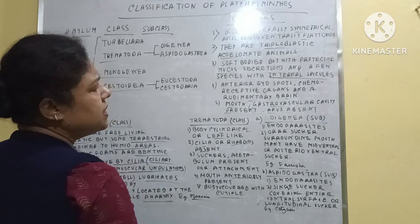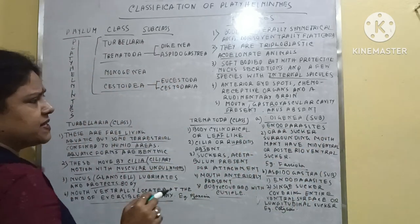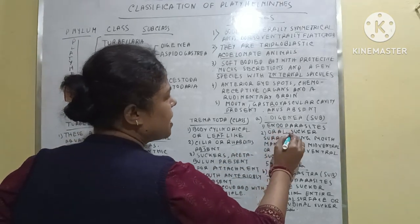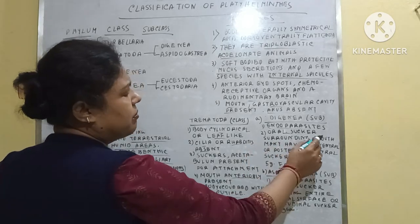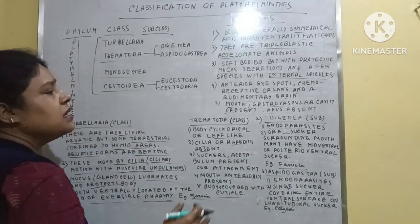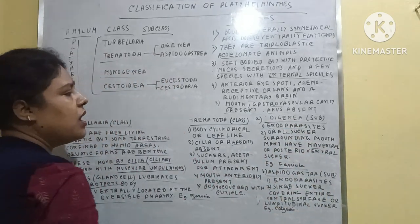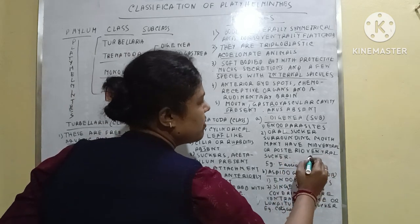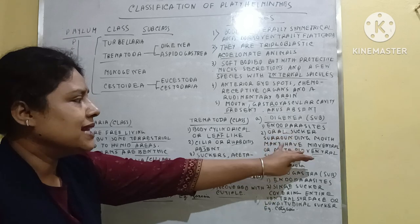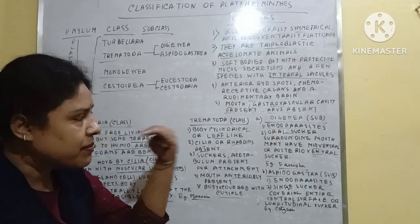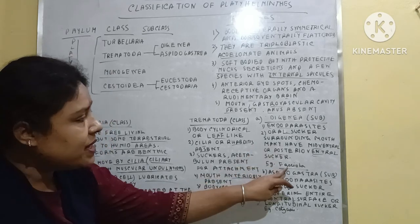The subclass Digenea: these are endoparasites, and suckers are present — the oral sucker surrounds the mouth. In many cases, suckers are also midventral or posterior-ventral. The example is Fasciola.